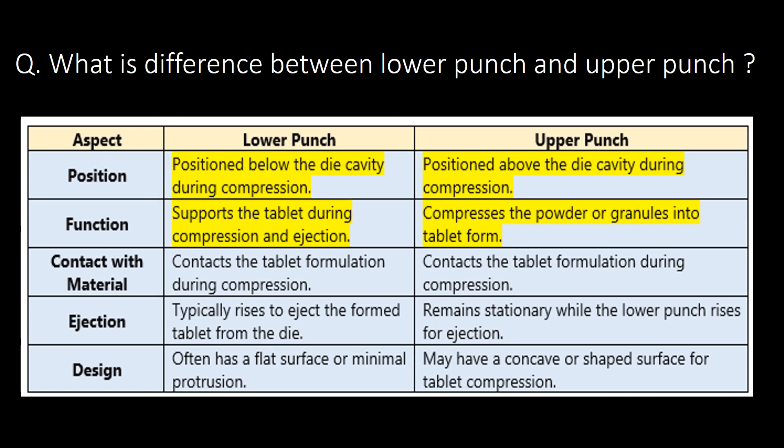What is the difference between the lower punch and upper punch? You can refer to the table below for the difference. The lower punch is positioned below the die cavity during compression, whereas the upper punch is above the die cavity. The function of the lower punch is to support the tablet during compression and ejection, whereas the upper punch compresses the powder or granules into tablet form.